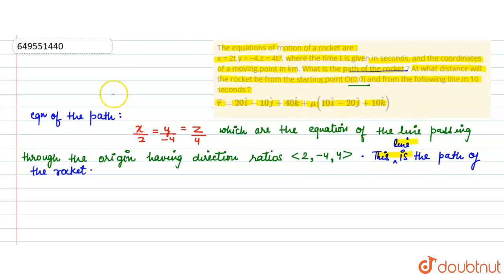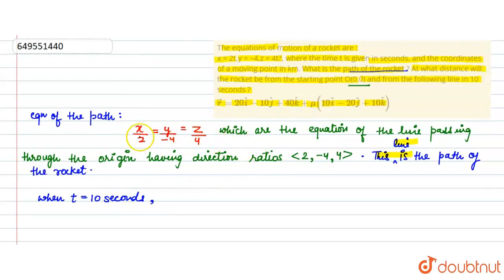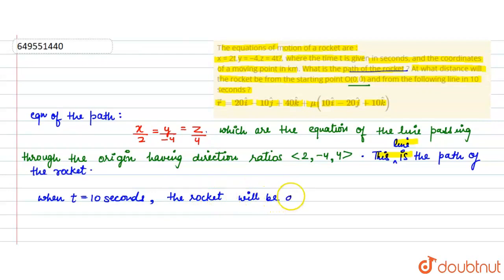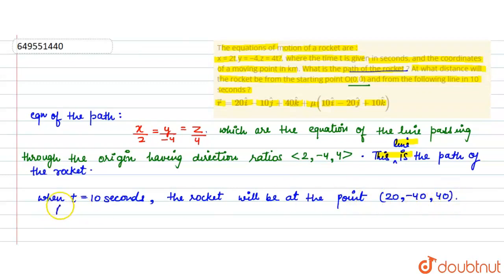Now the second part: at what distance? We need to find the distance. At time t = 10 seconds, as given in the question, we substitute t = 10 into the equations: x = 20, y = -40, and z = 40. So at t = 10 seconds, the rocket will be at the point (20, -40, 40).